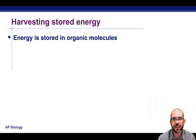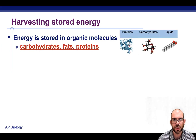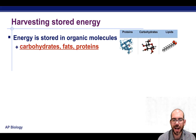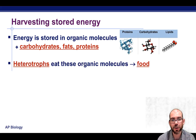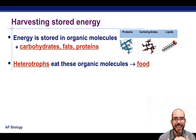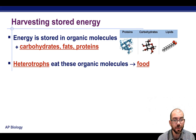To do this, living things are going to have to extract or harvest the energy stored in organic molecules. Most commonly, the energy that can be found in the bonds forming carbohydrates, fats, lipids, and proteins. If you are a heterotroph, an organism such as a human, you obtain these biomolecules by eating other molecules through the food that you eat, whether it's an animal or a plant.